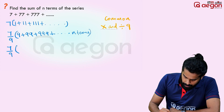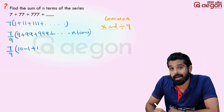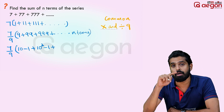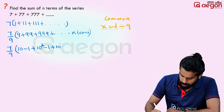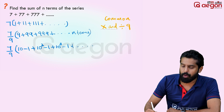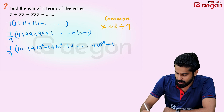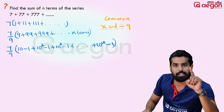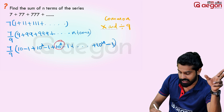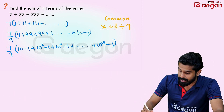So 7 by 9 into: 9 is 10 minus 1, 99 is 100 minus 1, which is 10 squared minus 1. Triple 9 is 1000 minus 1, that is 10 cubed minus 1. So the nth term will be 10 raised to n minus 1. The first term is 10 raised to 1 minus 1, next is 10 squared minus 1, then 10 cubed minus 1. So the nth term is 10 raised to n minus 1.